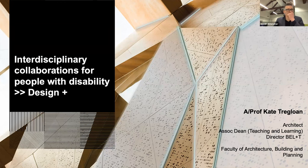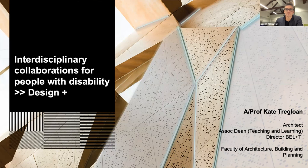Kate Tregoan introduces herself. She's an architect who is deeply interested in education, particularly the education of professionals who work in built environments. She acknowledges joining from the lands of the Wurundjeri and recognises elders past, present and emerging. She's been working on these projects since 2012 — a decade of work — and highlights that it has involved contributions from many people. Her focus has mostly been on housing design for people with disability, coming at teaching and learning from another direction.